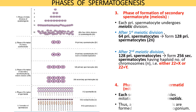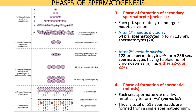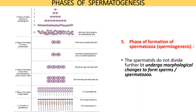The fourth phase of spermatogenesis is the formation of spermatids by mitosis. Each secondary spermatocyte divides mitotically to form two spermatids, thus in total 512 spermatids are formed from a single spermatogonium.